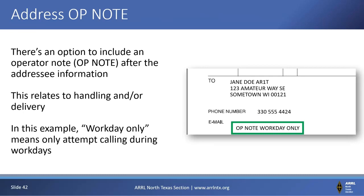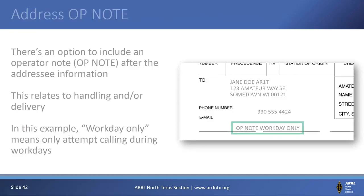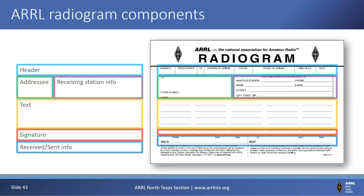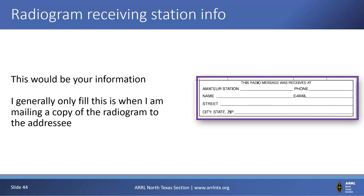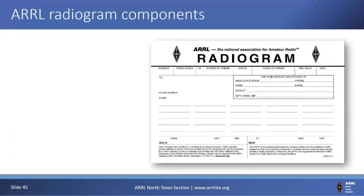Op notes come into play in two places. The first is here in the address section — it relates to handling or delivery. For example, 'workday only' would mean please only try making the phone call during work hours. That's helpful if you've got a phone number that's a business — no point in calling on weekends. Op notes in the address are very rarely used, but it is possible. On the receiving station info section: I would only fill that out if I'm putting it in the mail so the person knows who I am.